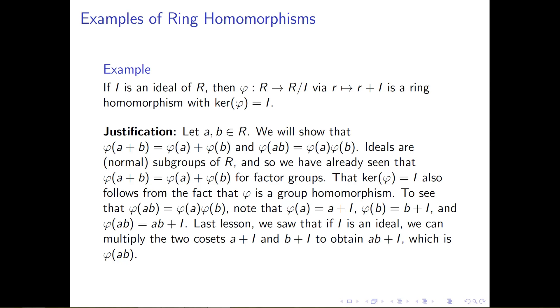So φ of a plus b is φ of a plus φ of b, and we've also studied that the kernel is what I said it is. It is this ideal I because it's the subgroup I.